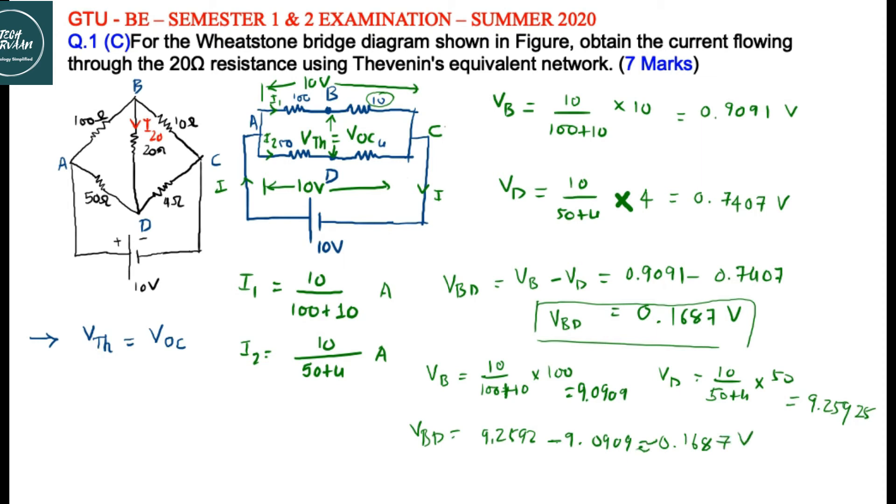It will be 0.1687 volt. In both cases we are getting similar kind of answer. Now we have value of VBD, that is VTH, which is open circuit voltage. So let us write VTH here. VTH is equal to 0.1687 volt.